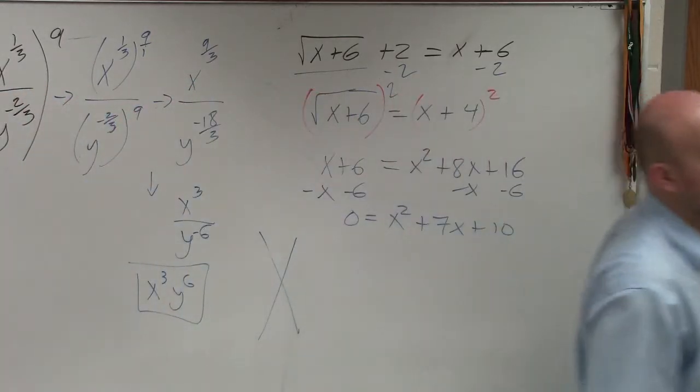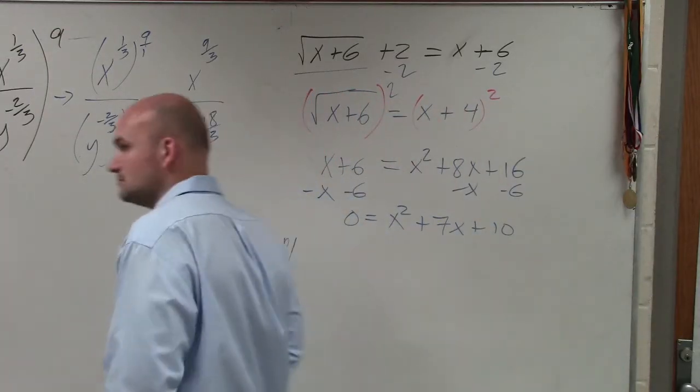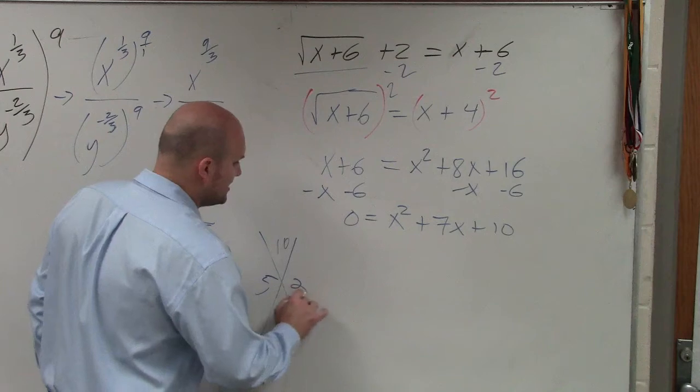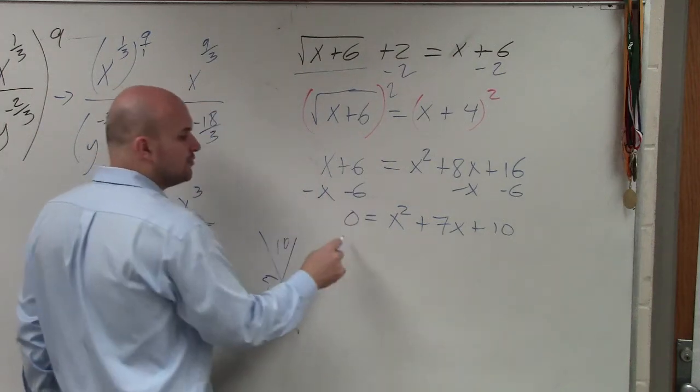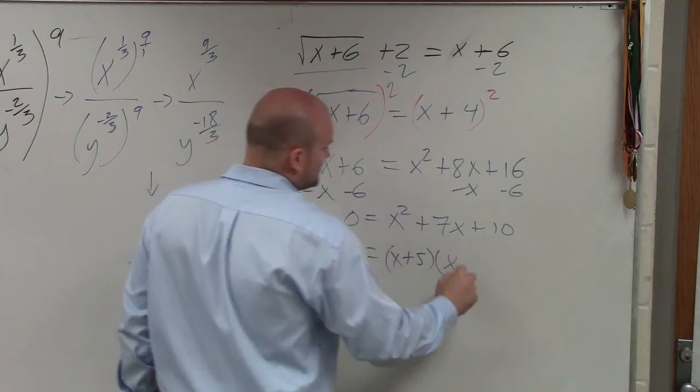Is there any two numbers that multiply to give me 10 but add to give me 7? 5 and 2. So those are going to be part of my two factors, since a is equal to 1. So 0 equals x plus 5 times x plus 2.